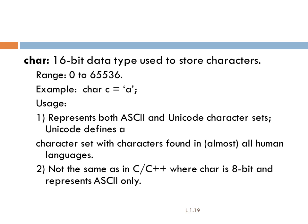Char: in order to represent a single character, we use a 16-bit character data type. The range of characters is 0 to 65,536. For example: char c = 'a'. Java represents both ASCII code characters and Unicode characters. ASCII values have a range of only 0 to 127 or 255, but to support a large number of characters from different languages, Java uses the Unicode character format.